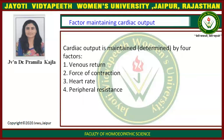Now we will discuss the factors maintaining cardiac output. Cardiac output is mainly determined by four factors: first is venous return, then force of contraction, third is heart rate, and last one is peripheral resistance.